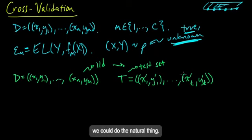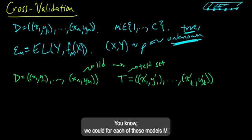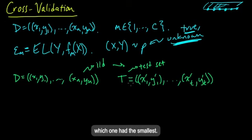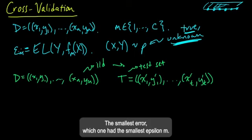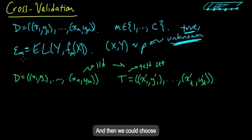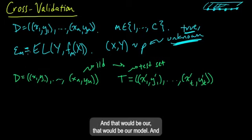Well, then we could do the natural thing. We could train our model for each of these models M. We could train on the data set D and then test it on the test set. And see which one had the smallest error, the smallest epsilon M. And we could choose the one with the smallest error. And we would happily go on our way. And that would be our model M.